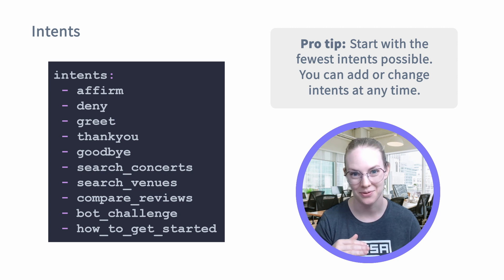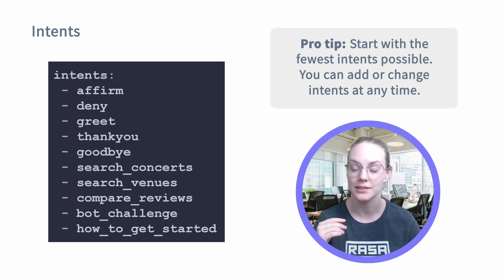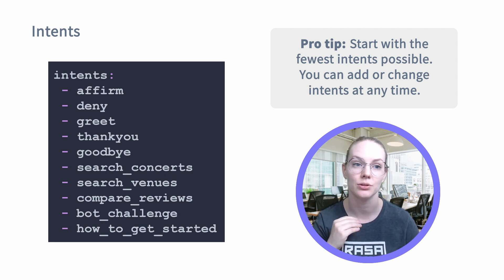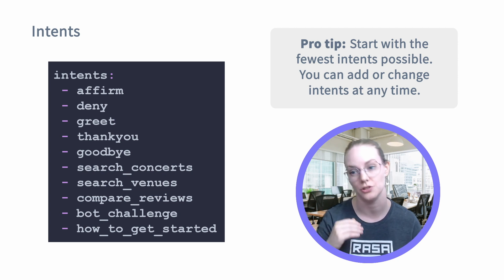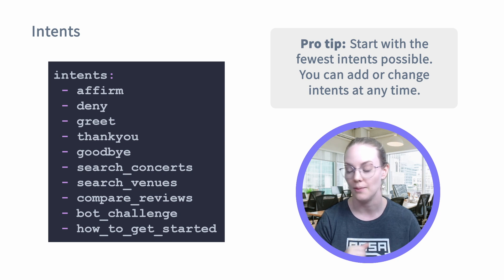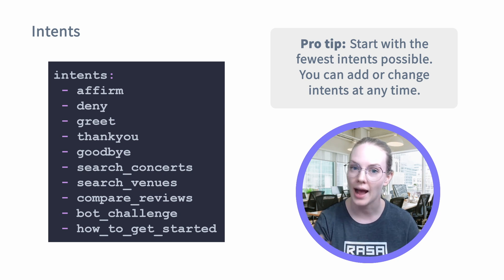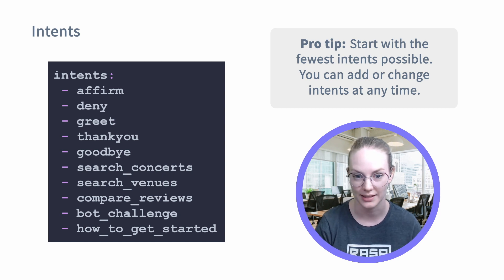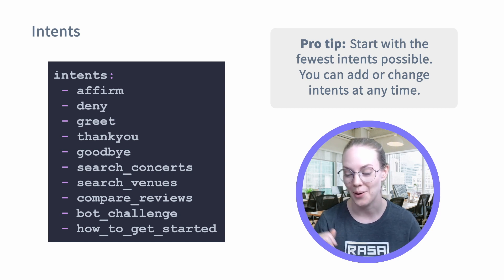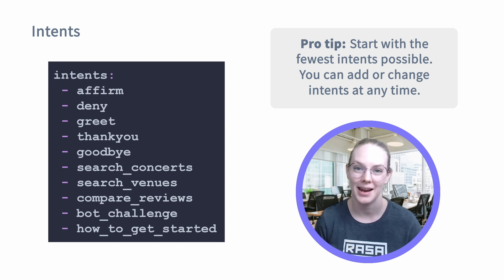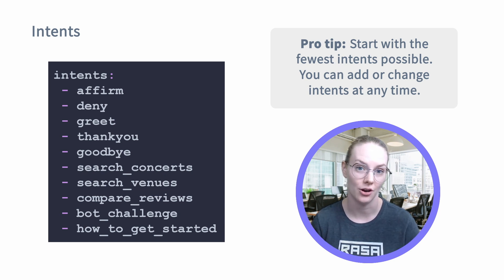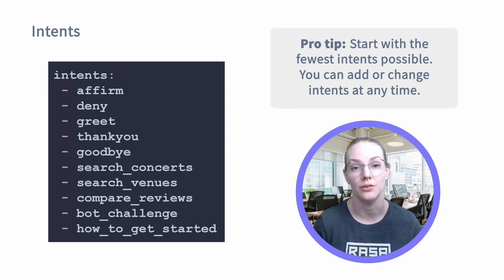My number one tip for writing intents is to start with the absolute smallest number of intents you can. You can change or add intents at any time with your Rasa assistant, but starting with too many will create just a huge headache. You don't necessarily know what intents your users are going to use the most until you get it in front of test users.